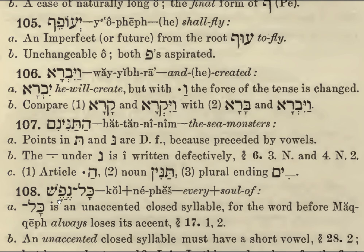Col Nefesh — every soul of. Col is an unaccented closed syllable. Because it is joined together, the accent is on Nefesh. This syllable is closed and unaccented. This is because the word before the Makef always loses its accent. An unaccented closed syllable, as we saw before, must have a short vowel. So this is not the long AH sound — it looks like it, but it isn't.